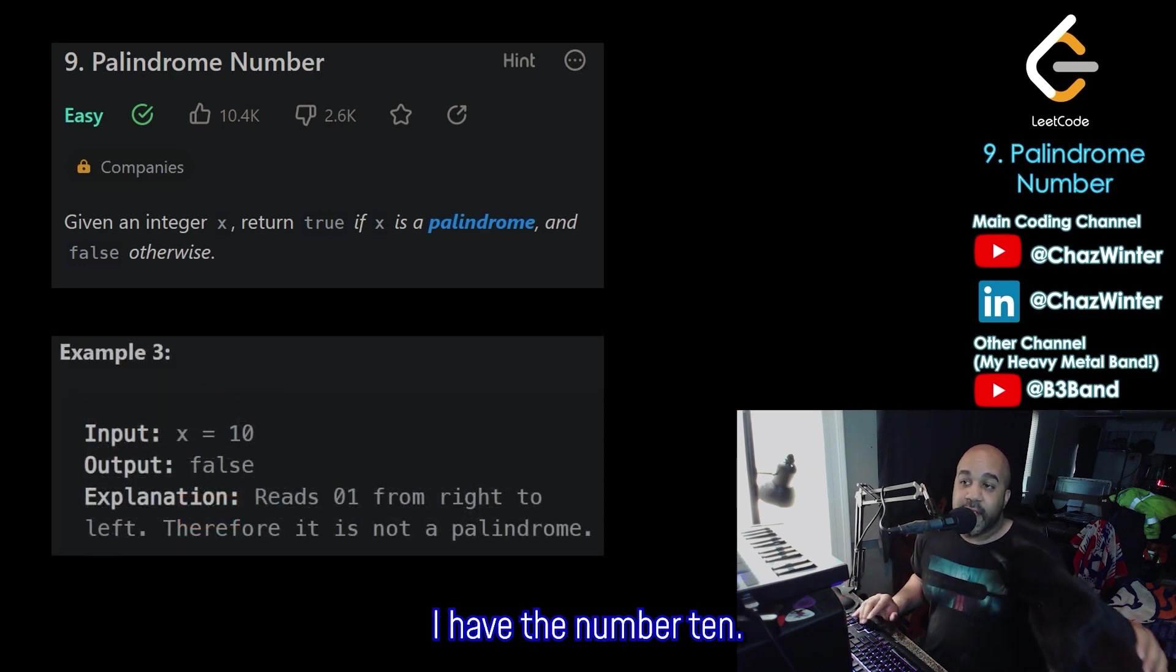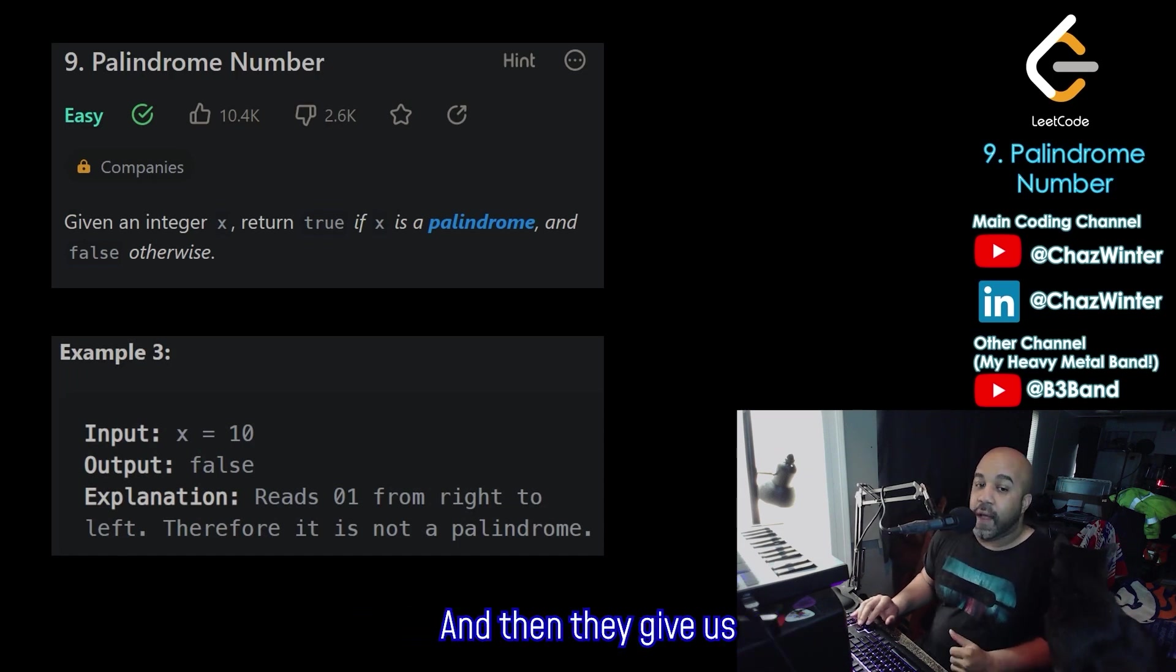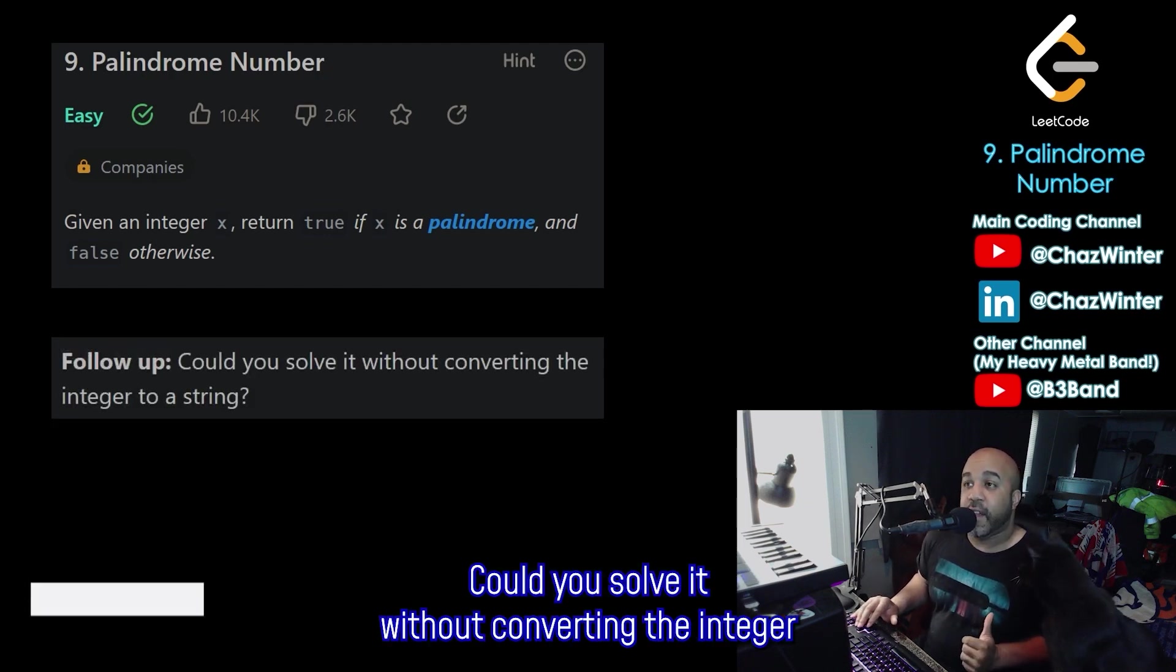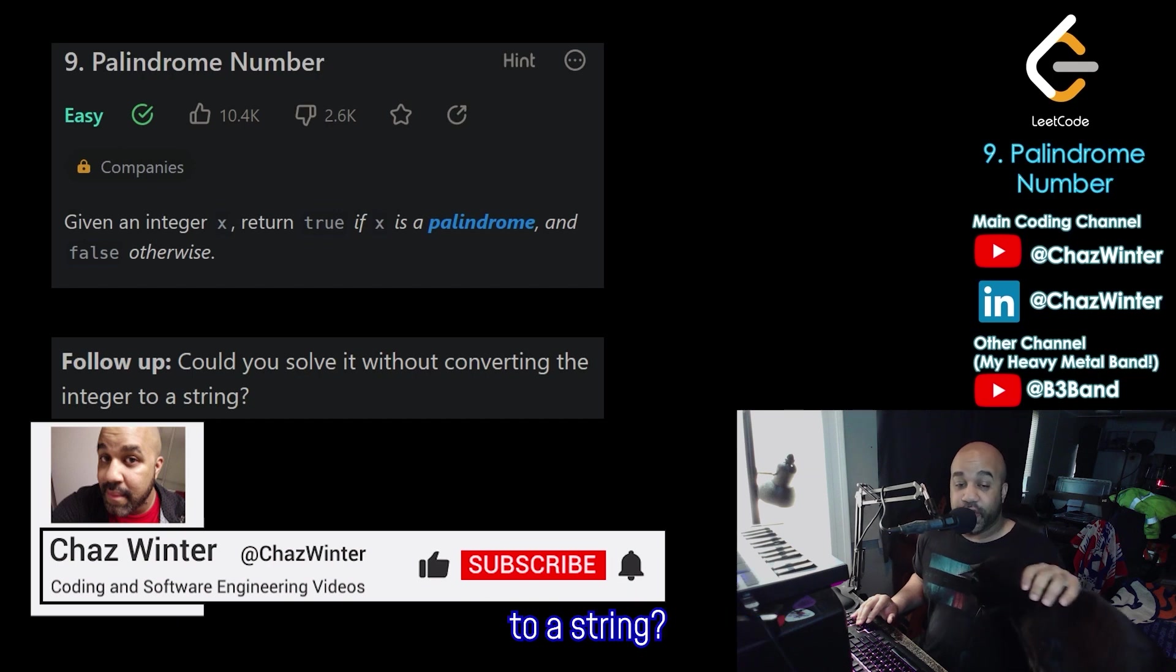In example three, I have the number 10. If you try to read it backwards, it reads 01. So that's not going to work for us. We're going to return false. And then they give us one last part here. It asks, could you solve it without converting the integer to a string?